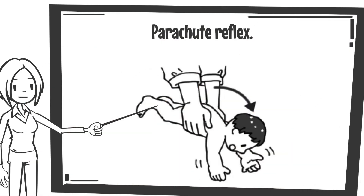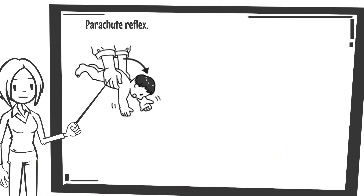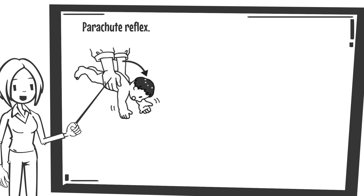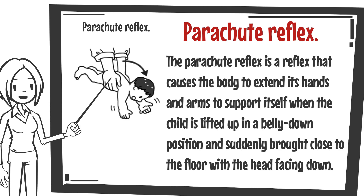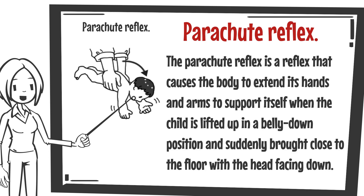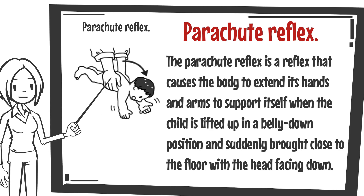First, let me explain the parachute reflex. The parachute reflex is a reflex that causes the body to extend its hands and arms to support itself when the child is lifted up in a belly-down position and suddenly brought close to the floor with the head facing down. It is the foundation for being able to reach out quickly when you fall. It can be seen from around eight to nine months of age, so in Japan it is often checked at the ten-month check-up.